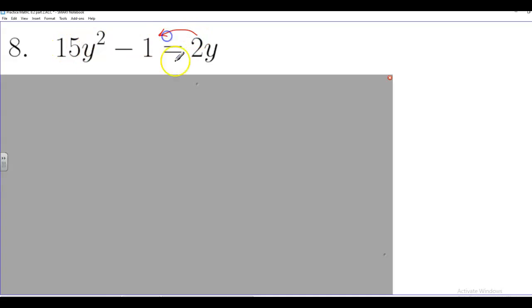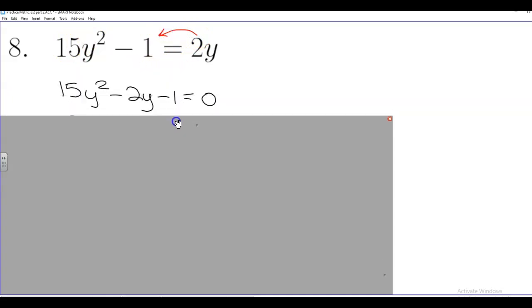So I'm going to bring the 2y across the equal sign. And we're going to do that by adding its opposite. So we already have 15y squared. And then this guy, when it comes over here, it's going to be negative 2y. And then we already have negative 1.